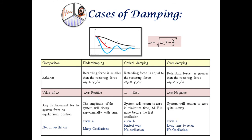In the case of underdamping, since the retarding force is smaller than the restoring force, the value of omega will be positive and we will have many oscillations.